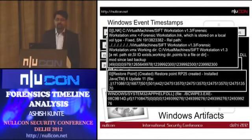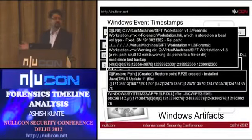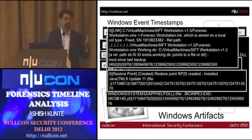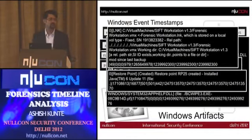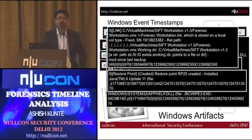All these artifacts — event logs, registry, prefetch, recycle bin, restore points, shortcuts — can be parsed and combined. You create a timeline.csv, a comma-separated value file — essentially an Excel sheet that's easy to analyze. You can put all timestamps from all artifacts together and create a single timeline.csv.